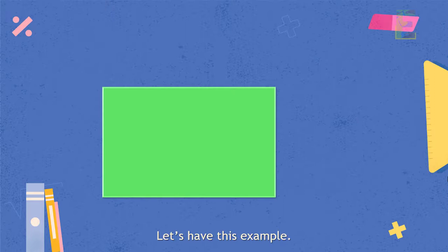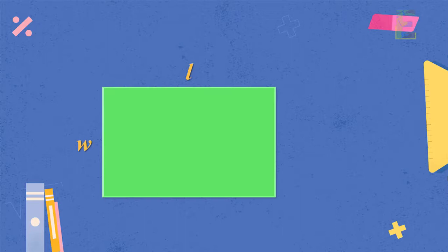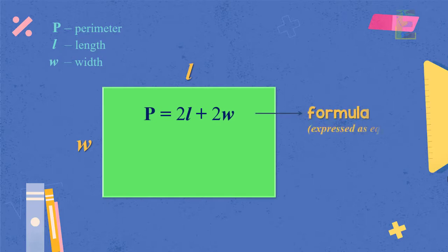Now let's have this example. Let us solve for the perimeter of a rectangle. The formula in finding the perimeter of a rectangle is P equals 2L plus 2W. P is the perimeter, L is the length, and W is the width. So notice that the formula is expressed as an equation.